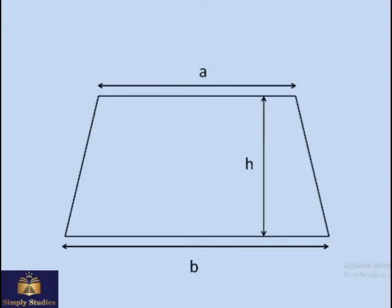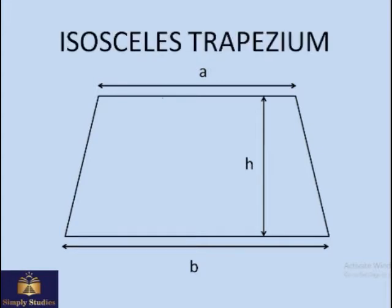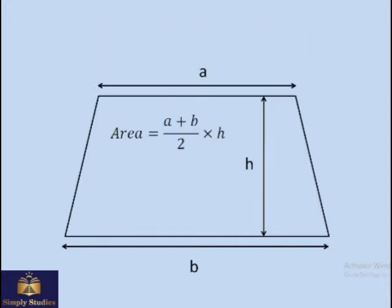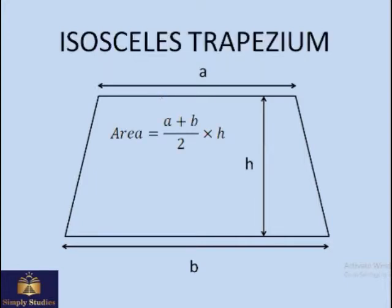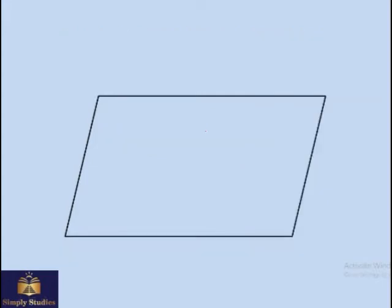So the area of the trapezium will be the average of top and bottom lengths times h. So the area is (a + b) / 2, that's the average of the top and bottom sides, times the height. Okay, let's do another shape.